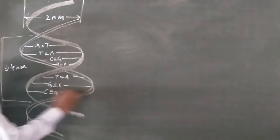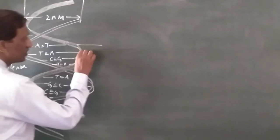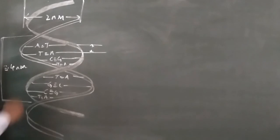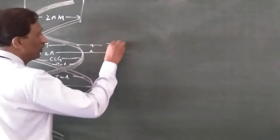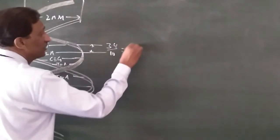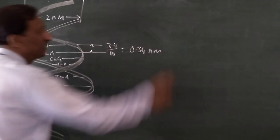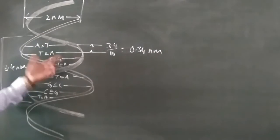So the base pairs are: adenine to thymine, guanine to cytosine, cytosine to guanine, thymine to adenine. The distance between two consecutive nitrogen bases is 3.4 nanometres divided by 10, which equals 0.34 nanometres.